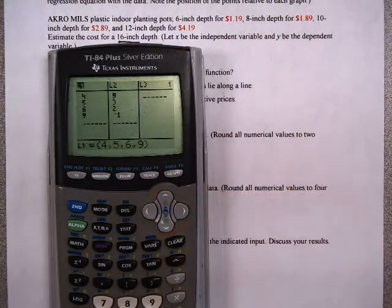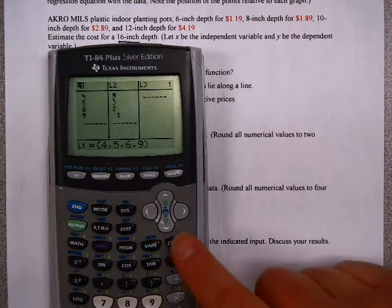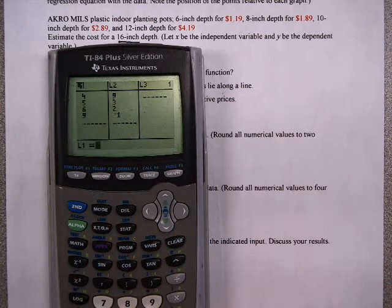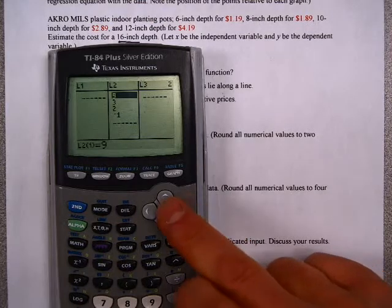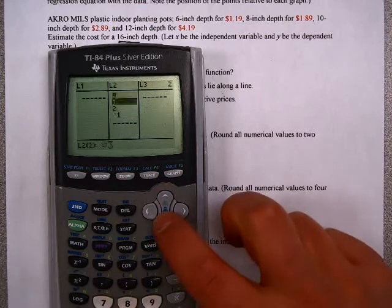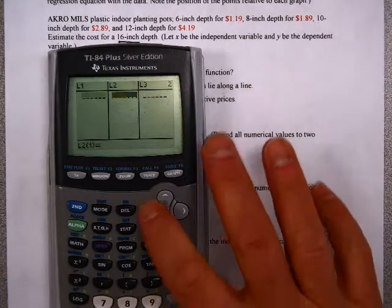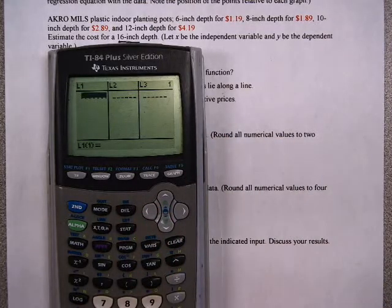You may have data in there from when you've done this before. Use your arrow keys to get to the top of the L1 list. To clear the L1 list, you need to only hit the button Clear and Enter. If you do that, it goes away, but you must be at the top of the list, not within the list, at the very top. So to clear L2, I'm going to put that up at the top there, hit Clear, and then Enter. Now I'm free to enter my data. I'm going to enter all my input values, my X values, my depth of the pot first.